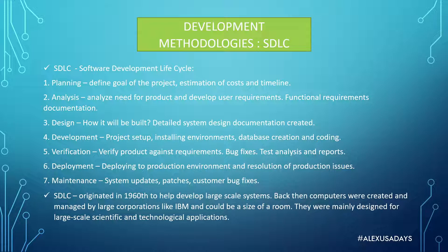This is the most classical representation. It's called a cycle because if the product will be developed with new additional features, redeveloped, or upgraded, it might go through the whole thing all over again. For example, the difference between iPhone 4, 5, 6, and 7 — each new release goes through all the stages: planning, analysis, design, development, verification, deployment, and maintenance.